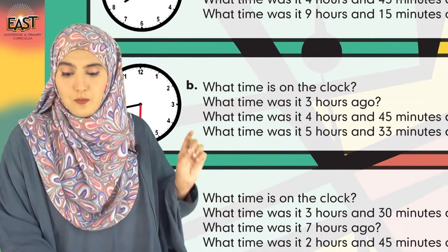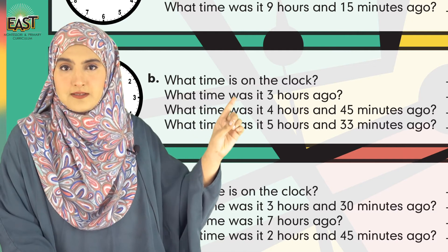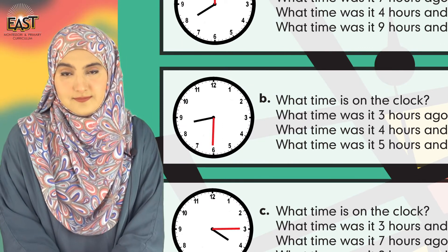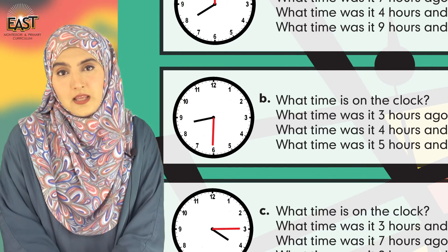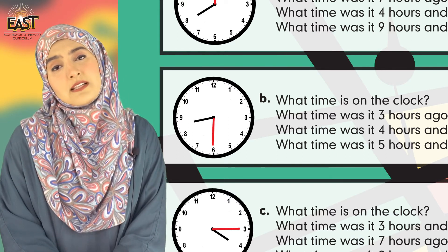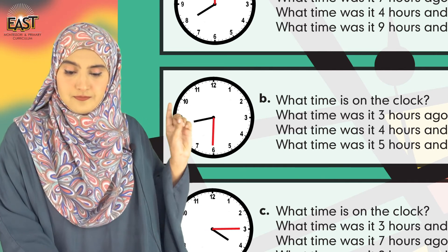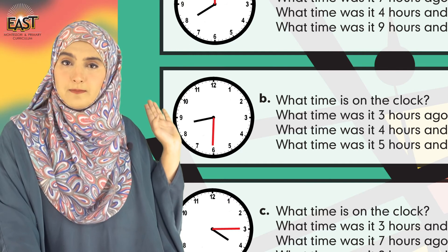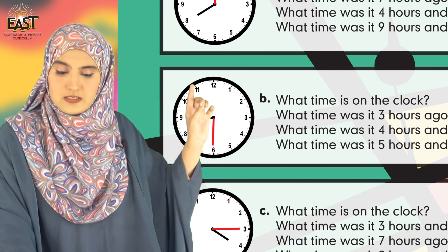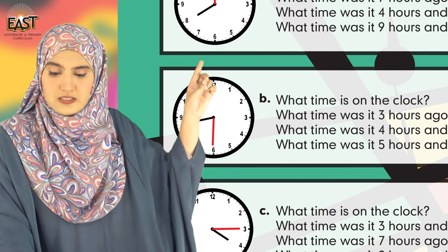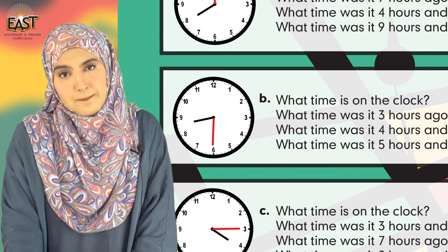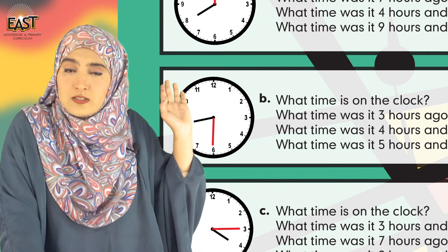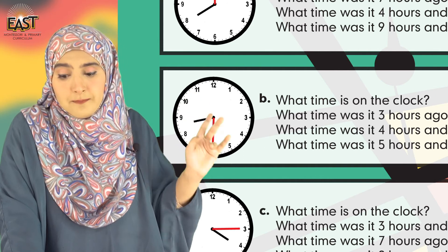Very good. So what time was it four hours and forty five minutes ago? Four hours forty five minutes pehle kya time ho raha ho ga in Part B? First take four hours back from eight thirty: eight thirty becomes seven thirty, six thirty, five thirty, four thirty. Now you have to take it a further forty five minutes back as well, and the time will become three forty-five.